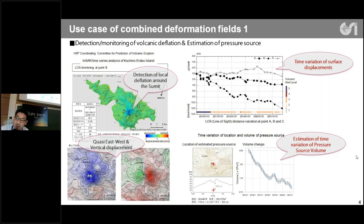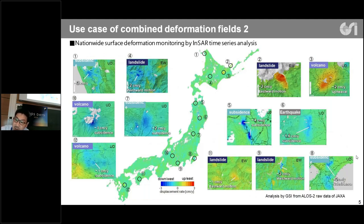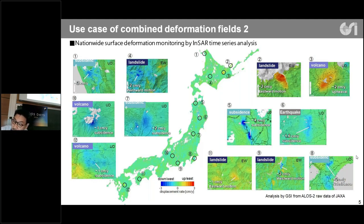Another example is nationwide monitoring of surface deformation by InSAR time series analysis, which is already combined with GNSS. We remove the long-wavelength spatial signal from the deformation field to reveal local signals. This combined product is a showcase for detecting signals caused by subsidence, landslides, volcanoes, and post-seismic deformation from local earthquakes.